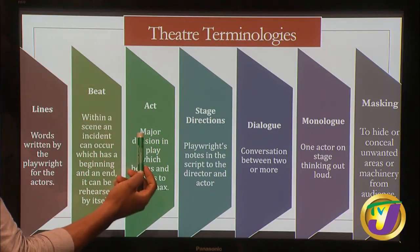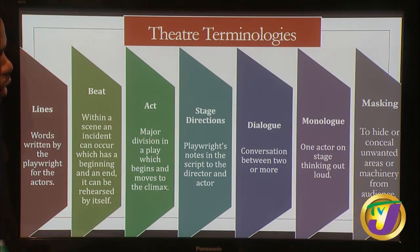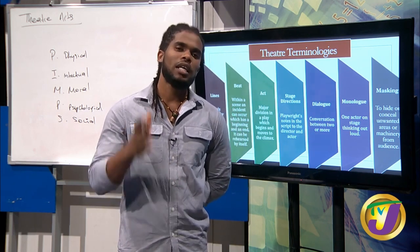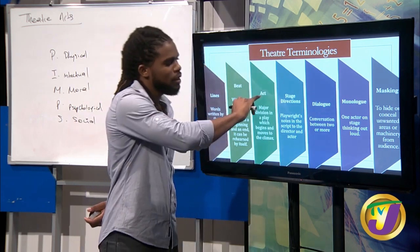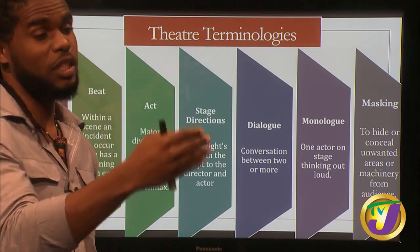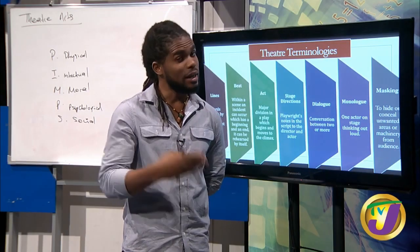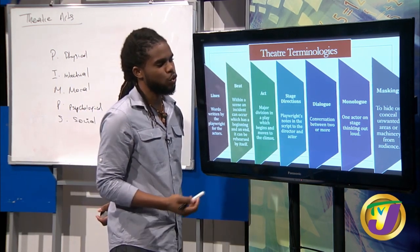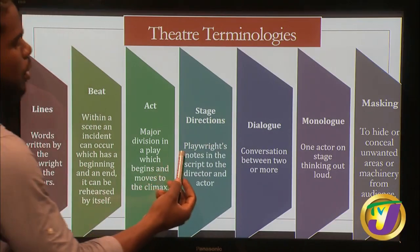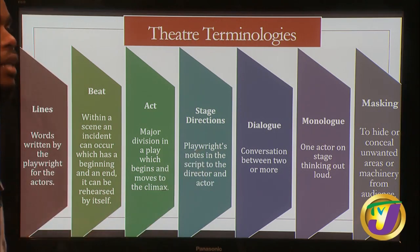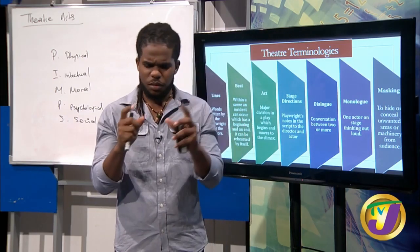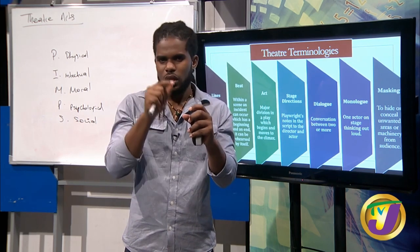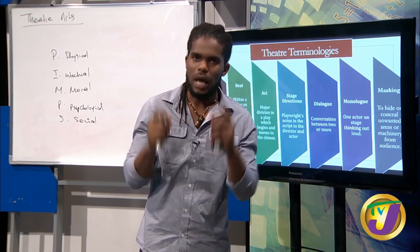We have the act — a major division in a play which begins and moves to a climax. If you've seen a live play, you'll recognize the show is divided into two major halves: act one is the first segment before the intermission, and act two is the second half. Then we have stage directions — the playwright's notes in the script to the director and actor, such as 'walks away' or 'closes door.' These are instructions given to the actor or director by the playwright, though the director doesn't necessarily have to follow them exactly when developing their concept.